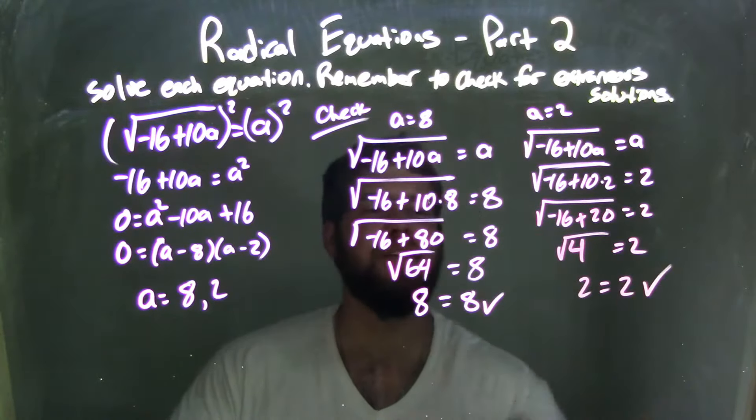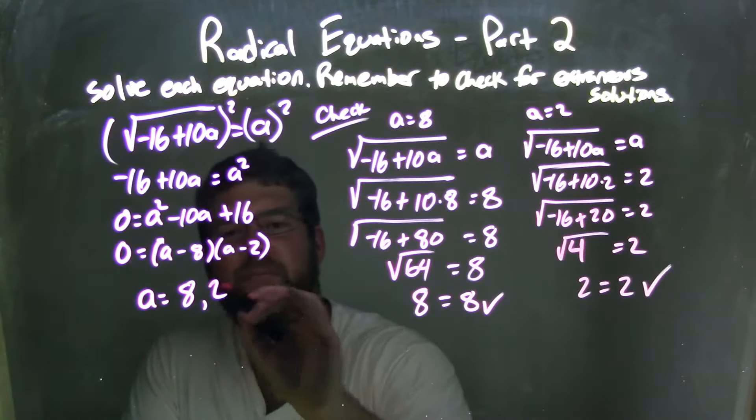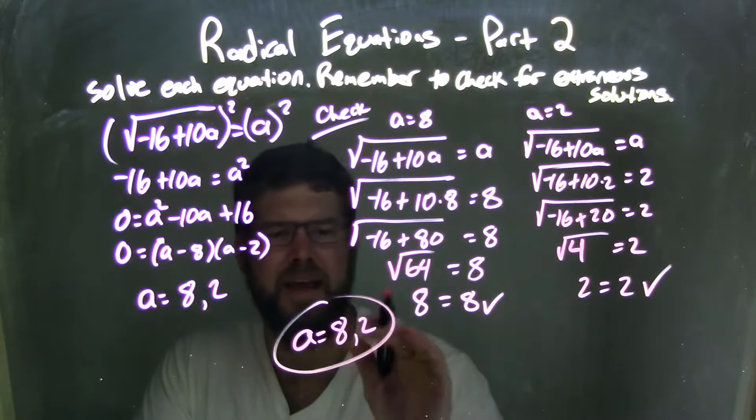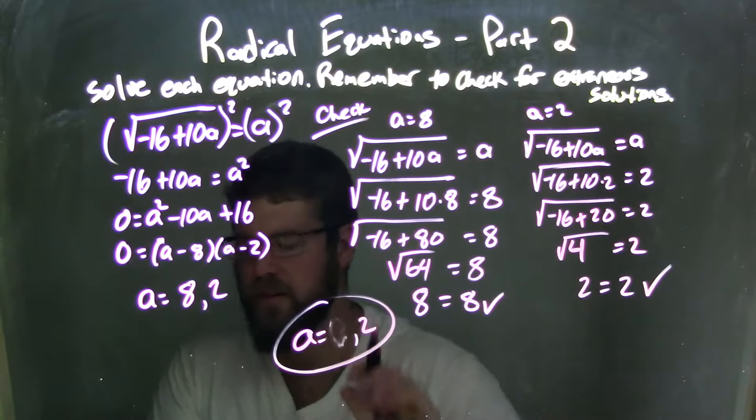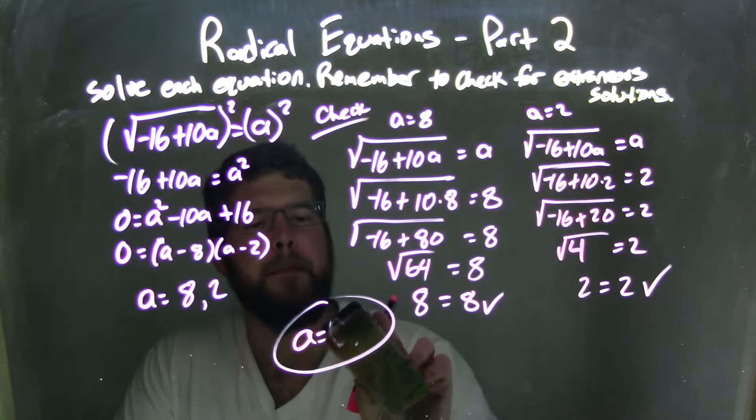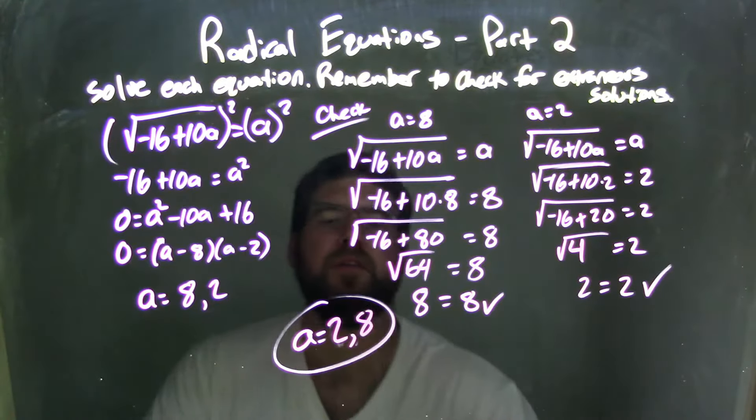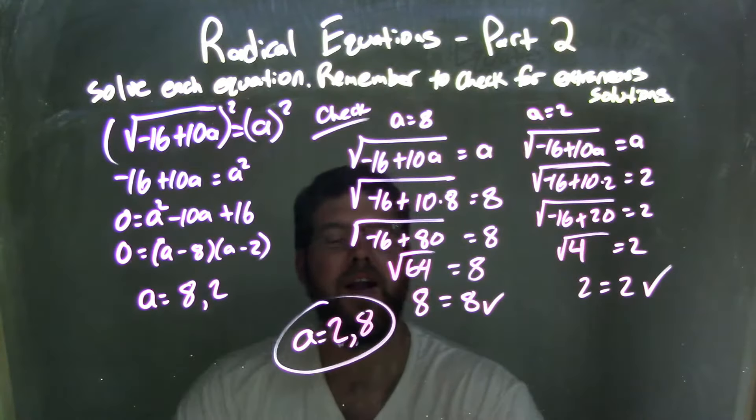And in this case, my left and right hand side are also equal. So that makes both of these a equals 8 and 2, or 2 and 8. It's a little nicer. Let's make it nice for me, Sean. Come on. You're better than that. 2 and 8 here. 2 and 8 are true solutions. None are extraneous.